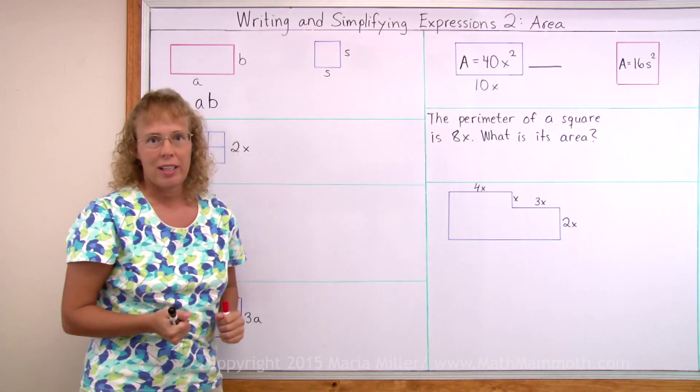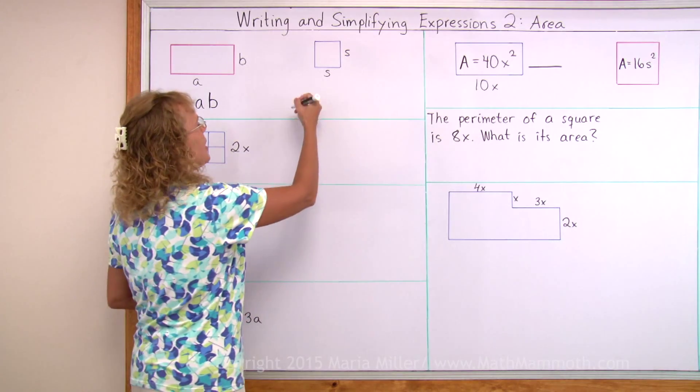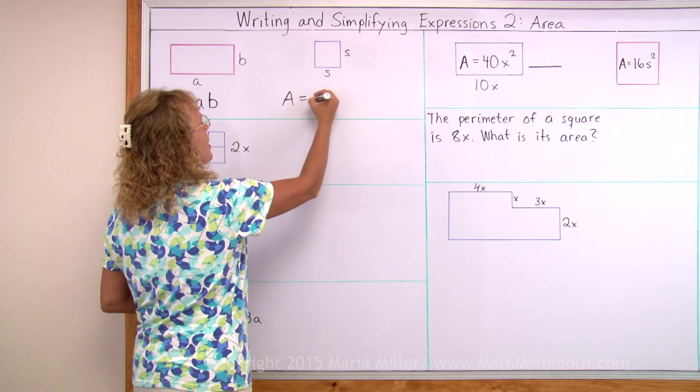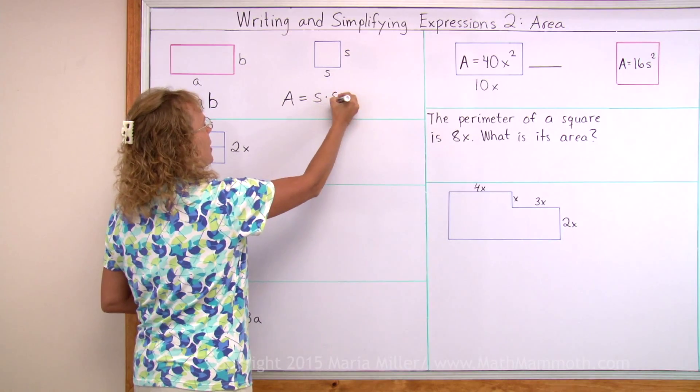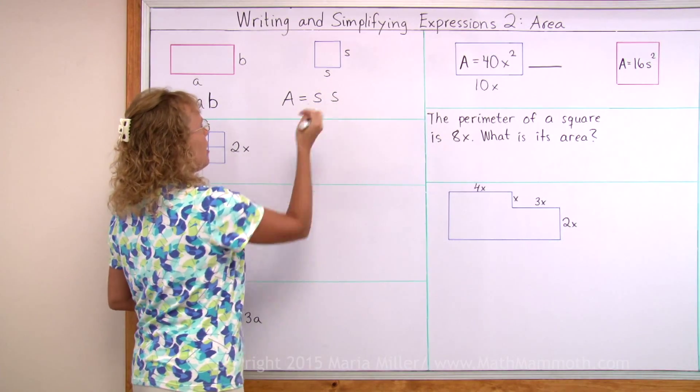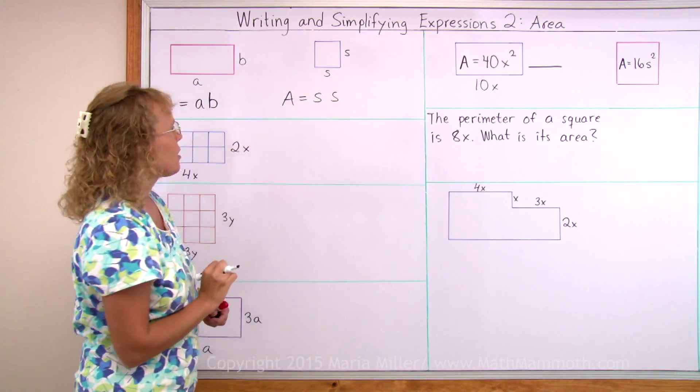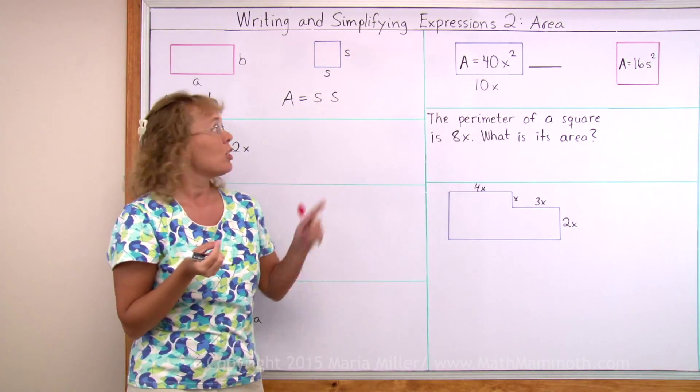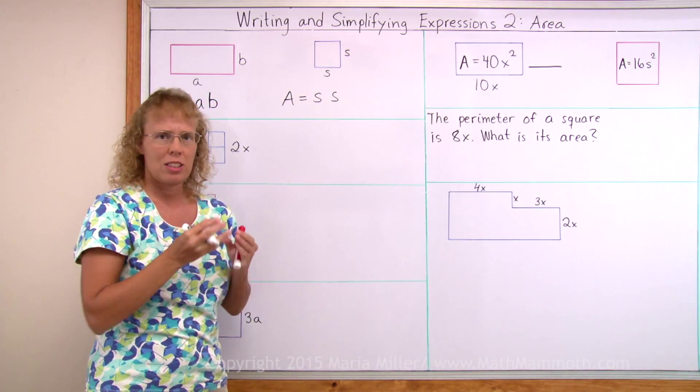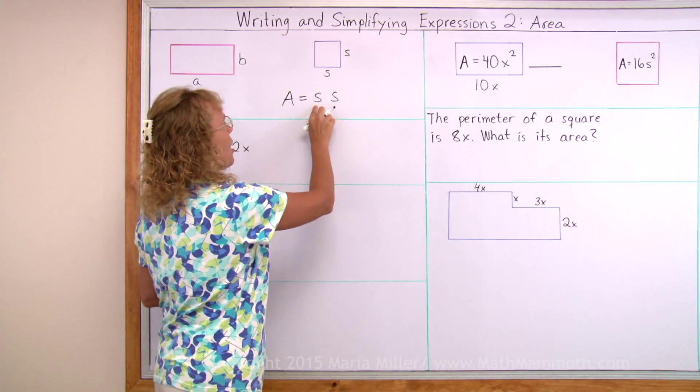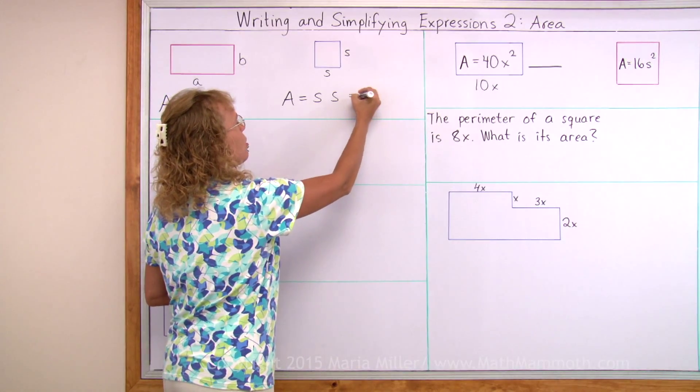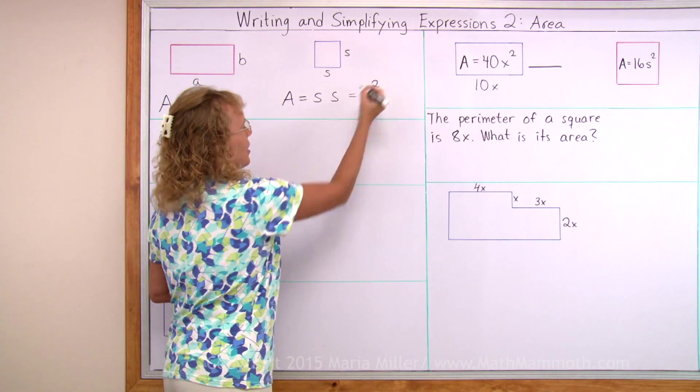This is a square, so its area would be S times S. I don't need a dot there between two letters, but now there is a way to simplify that, to write it in a simpler, shorter form. Because a number times itself, we can use an exponent, S squared.